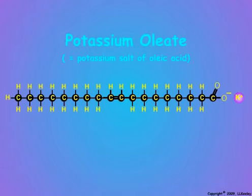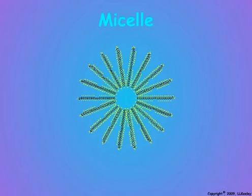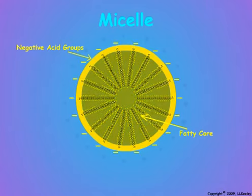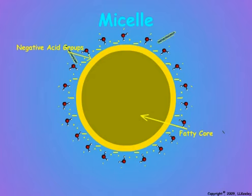Insecticidal soaps are potassium salts of fatty acids, of which oleic acid is an example. Soap molecules consist of a negatively charged acid group and a lipid chain that attracts fats and oily substances. Soap molecules clump together to form micelles — micro droplets of fats or oils suspended in water so that they appear to be in solution. Soap micelles have an outer ring of exposed acid groups and a fatty core of lipid chains. The outer electrically charged acid groups interact with water to hold the micelle in suspension, while the micelle core attracts fatty or oily molecules and holds them suspended in the water by emulsification.